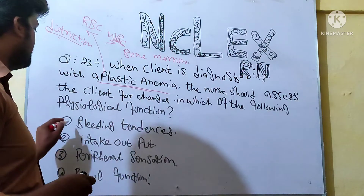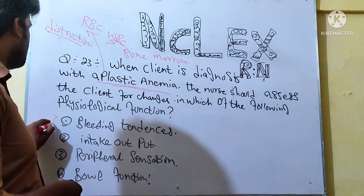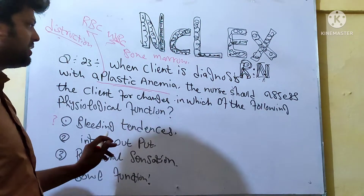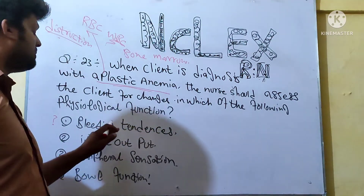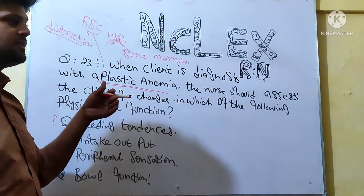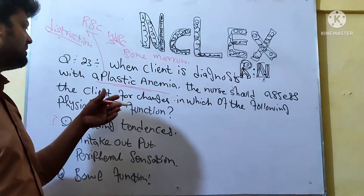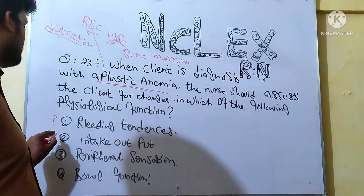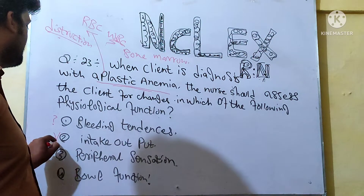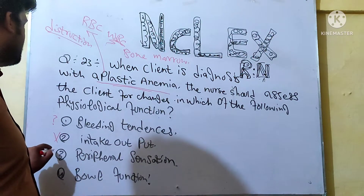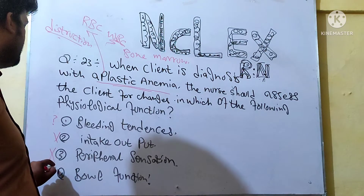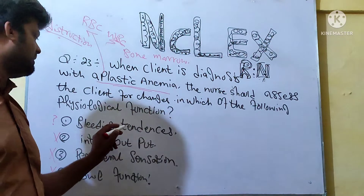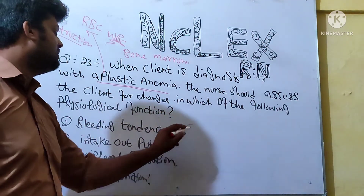The first option is bleeding tendencies. Other options include intake and output, peripheral perfusion, and bowel function. The right answer is bleeding tendencies.